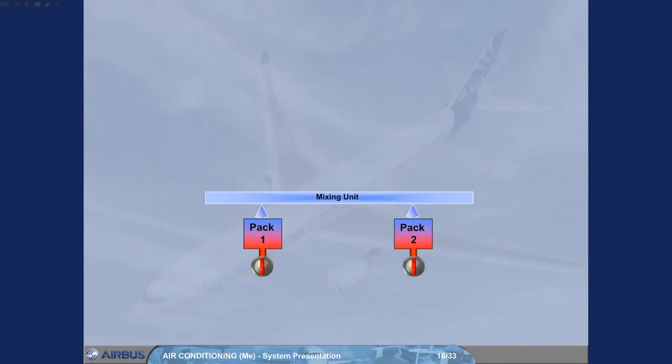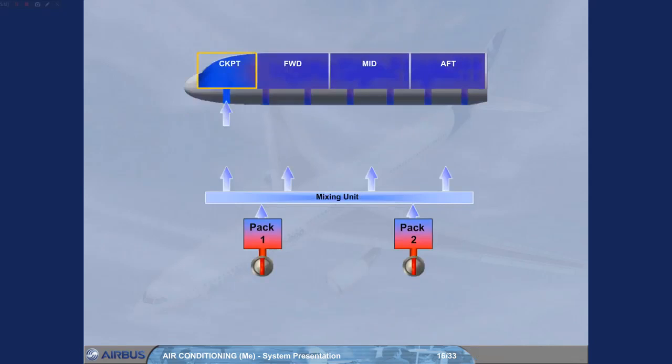The four outputs from the mixing unit feed four separate aircraft zones: the cockpit, the forward cabin, the mid cabin, and the aft cabin. Let's look at how the temperature of the zones is controlled.